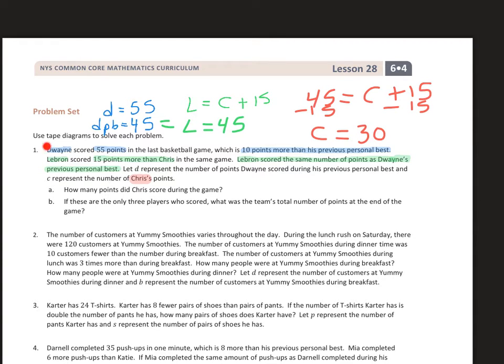I'm assuming this is Dwayne Wade, LeBron James, and Chris Bosh. So whoever wrote this is a fan of Miami basketball, but they're in New York. Anyway, so C plus 15, to get rid of the plus 15 on both sides algebraically, you can balance the equation by subtracting 15, which will cancel that out, leaving you C. And 45 minus 15 will be 30. So Chris scored 30 points, which answers question A.